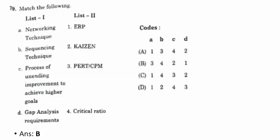Seventy-eighth question: a production facility organized around the process to facilitate low-volume, high-variety production is termed as C — process-focused production. Seventy-ninth question — match operations management terms: networking technique is PERT/CPM; sequencing technique is critical ratio; process of unending improvement to achieve higher goals is kaizen; gap analysis requirements is ERP (enterprise resource planning). The correct option is B — three, four, two, one.